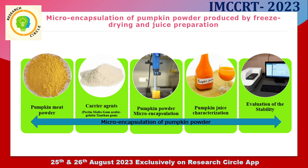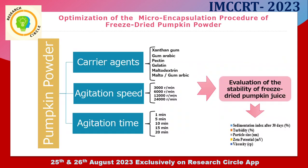The product was subjected to a series of tests such as evaluation of the stability of the powder and the solution of the juice. The optimization of the micro-encapsulation procedure is shown in this graphic. We used different kinds of carrier agents like xanthan gum, gum arabic, pectin, gelatin, maltodextrin, and mixtures of these carrier agents for some combinations.